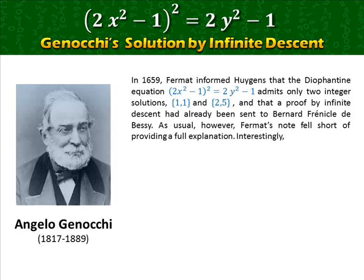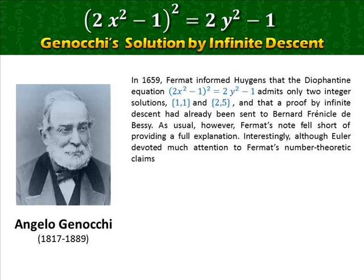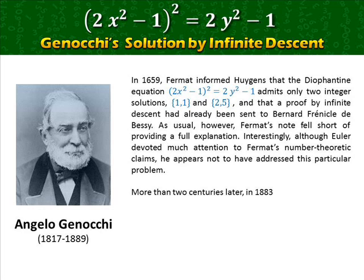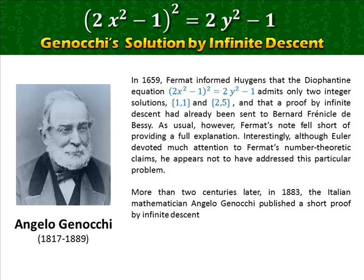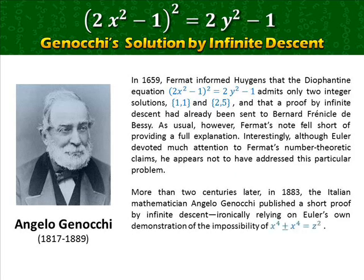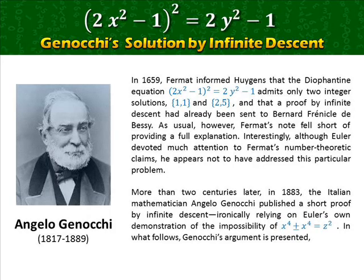Interestingly, although Euler devoted much attention to Fermat's number-theoretic claims, he appears not to have addressed this particular problem. More than two centuries later, in 1883, the Italian mathematician Angelo Genocchi published a short proof by infinite descent, ironically relying on Euler's own demonstration of the impossibility of a sum or difference of fourth powers equaling a square.